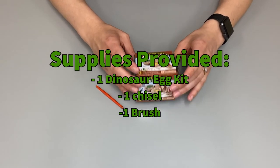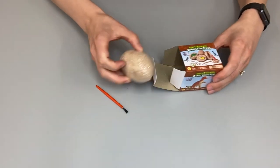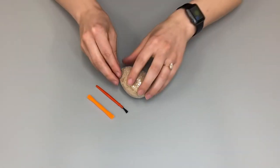As you open the box, you will find the dinosaur egg and a small orange chisel. The egg will be covered in a plastic wrapping, so make sure to go ahead and remove that.